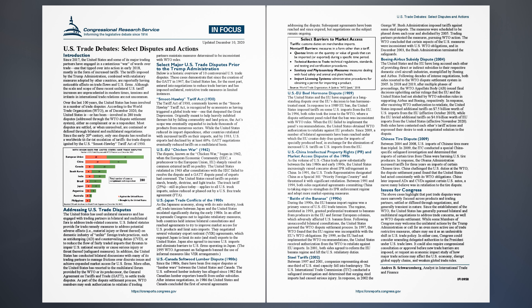Smoot-Hawley Tariff Act, 1930: The Tariff Act of 1930, commonly known as the Smoot-Hawley Tariff Act, is recognized by economists as having triggered a global trade war — one that deepened the Great Depression. Originally meant to help heavily indebted farmers hit by falling commodity and land prices, the Act's scope was eventually expanded to include thousands of products from numerous sectors. While the United States reduced its import dependence, other countries retaliated with increased tariffs on their imports, and by 1933, U.S. exports had declined by at least 60%. GATT negotiations eventually reduced tariffs on a multilateral basis.